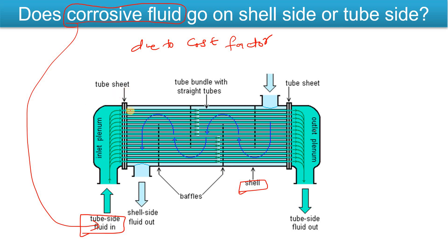The reason is very simple — it is because of the cost factor. The individual tube thickness or individual tube cost will be much cheaper than the entire shell side. The shell side thickness is more than the individual tube. So if the corrosive fluid goes in the tube side, only the tube bundle will be costlier. But if it goes in the shell side, the entire shell will need to be costlier, since shell thickness is higher than the individual tubes.